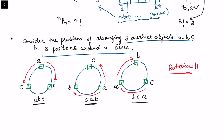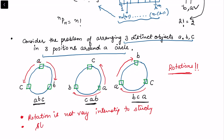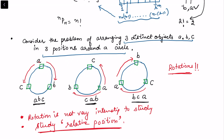Rotation is not very interesting to study. For example, with objects a, b, c, d, a is always sitting next to b in every rotation. What makes circular permutation interesting is studying the relative position — who comes on the adjacent side. The objects that are invariant under rotation define the circular permutation. We are interested in permutations that give a different arrangement even after rotation.